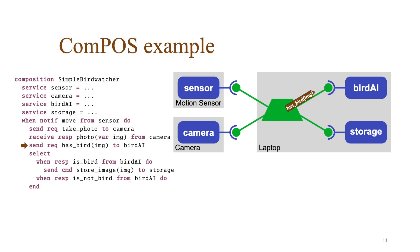In the next action, the composition sends a has bird request to the bird AI with the received image as parameter. The composition waits at the select for an is bird or is not bird response.